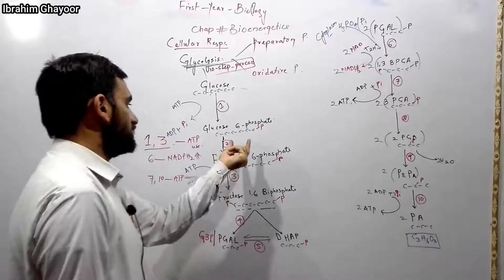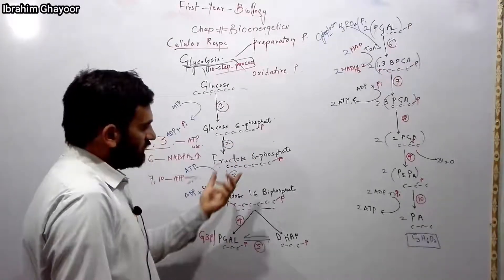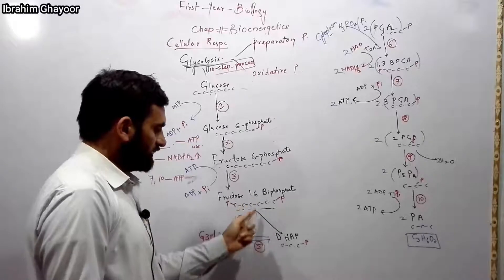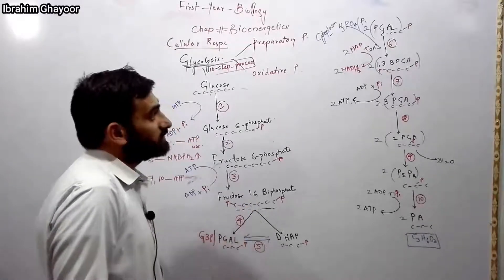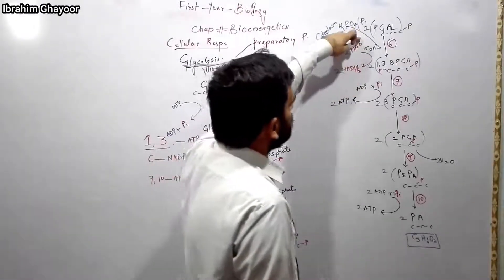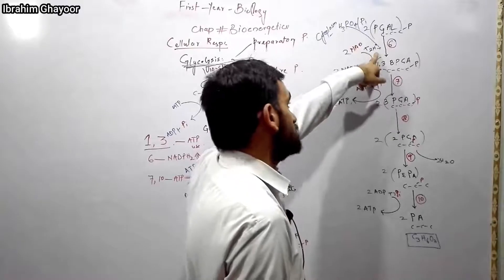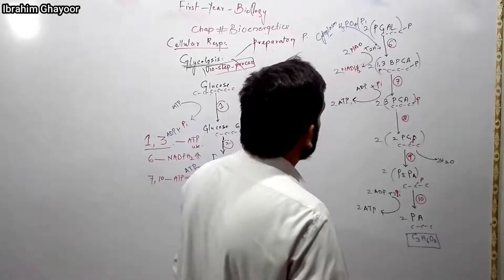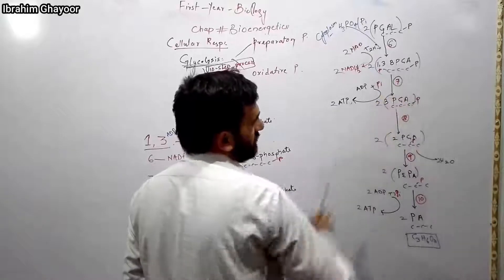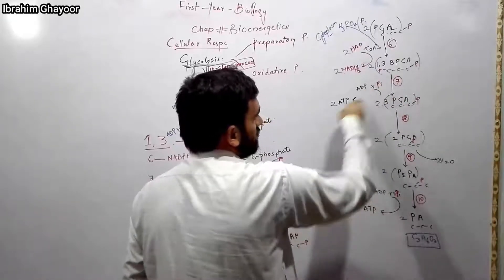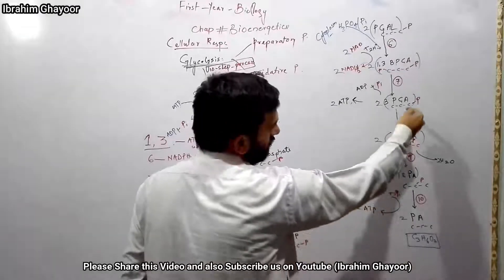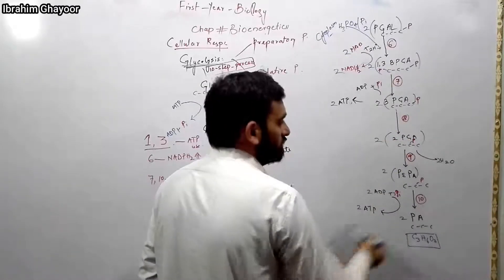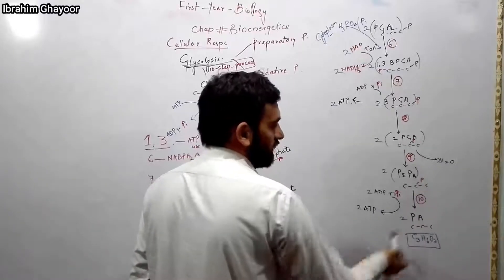To summarize glycolysis steps: step 1 is phosphorylation (ATP used), step 2 is isomerization, step 3 is phosphorylation (ATP used), step 4 is the cleavage reaction, step 5 is isomerization, step 6 is dehydrogenation producing NADH2, step 7 is production of 1,3-BPG, step 8 is phosphorylation producing ATP, step 9 is isomerization, and step 10 is the dehydration reaction.